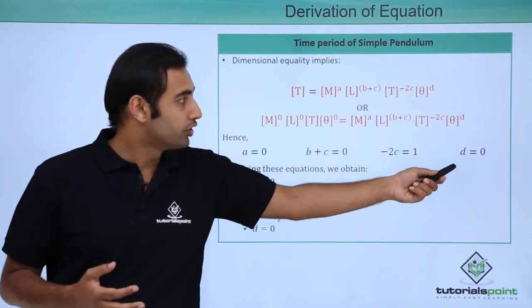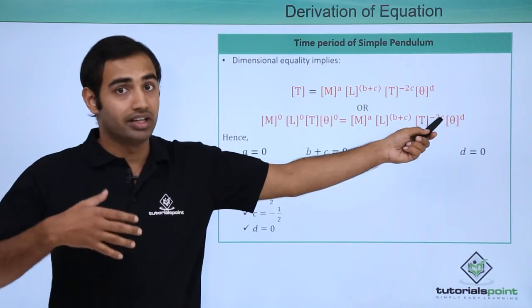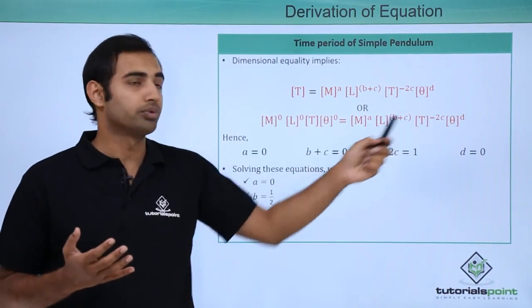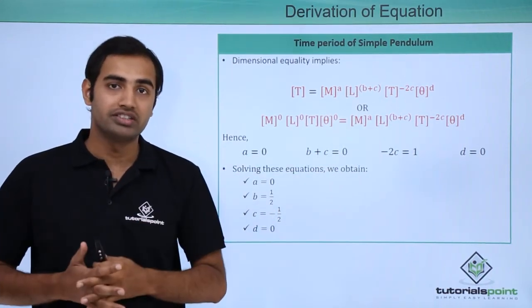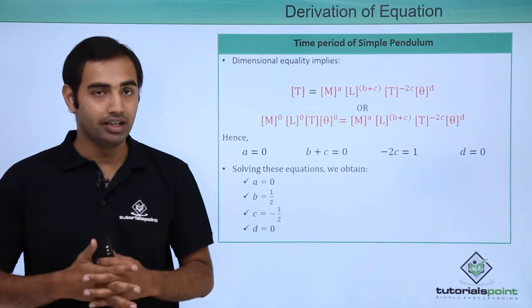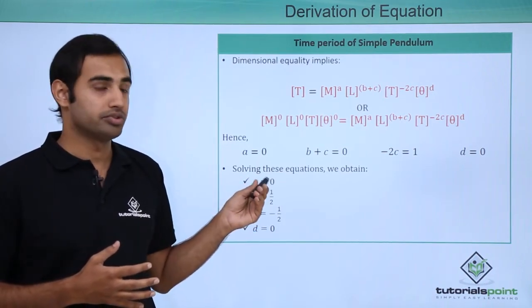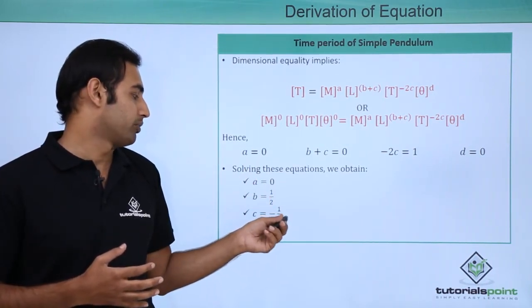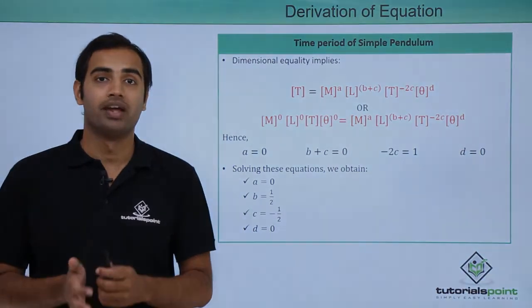Next, d is equal to 0 because the exponent of theta must also be equal to each other. Now solving for a, b, c, d, I finally obtain: a is equal to 0, b is equal to half, c is equal to minus half, and d is equal to 0.